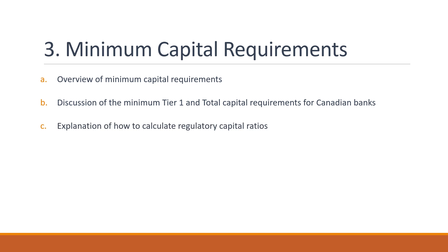Explanation of How to Calculate Regulatory Capital Ratios: Regulatory capital ratios are calculated by dividing a bank's regulatory capital by its risk-weighted assets. The risk weights are determined based on the bank's exposure to different types of risks, such as credit risk or market risk.